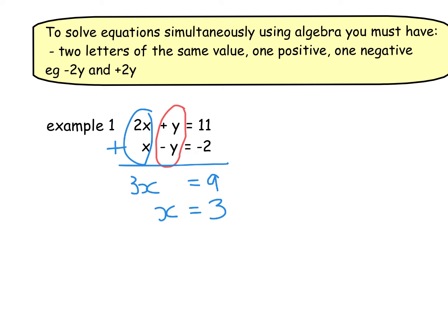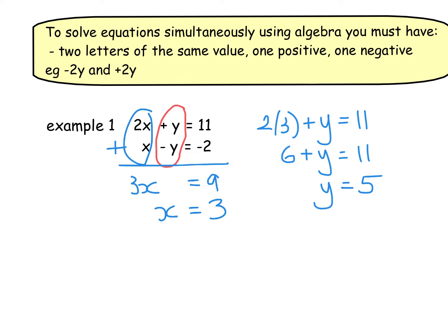Then what we do is substitute that into one of the two equations. I always use the one that doesn't have negatives in it because it just complicates things. So I'm going to sub this back into the top equation: 2 times 3 plus y equals 11. Now 2 times 3 is 6, so 6 plus y equals 11. So I'm doing 11 take away 6 which is 5. So x equals 3, y equals 5.